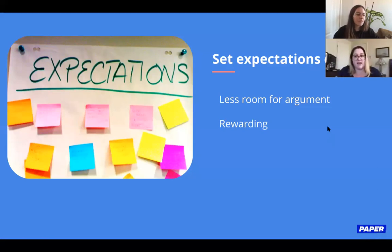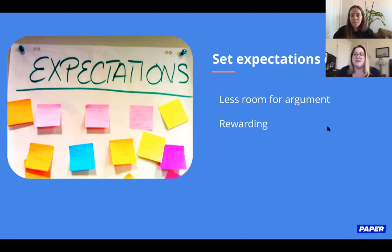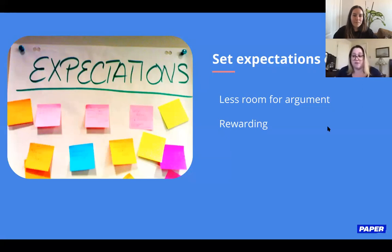One way to set expectations for your online classroom is to come up with an online classroom contract. In my physical classroom, one of the very first activities was sitting down and brainstorming together what we'd expect of ourselves and others in the shared space. We'd write it out, sign it, and then use homeroom time — or a reminder email — to revisit it and keep that in mind.